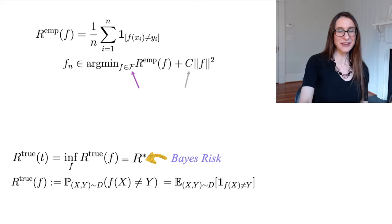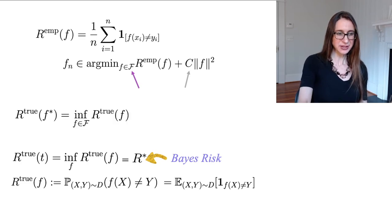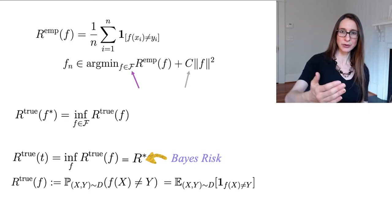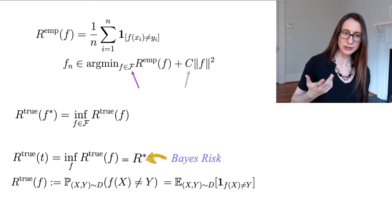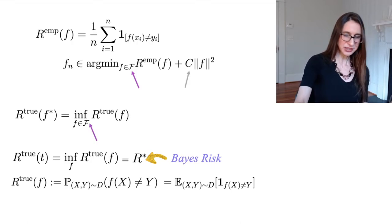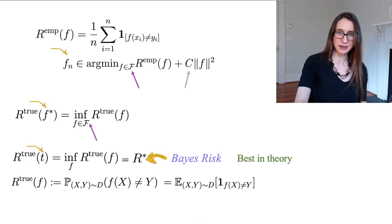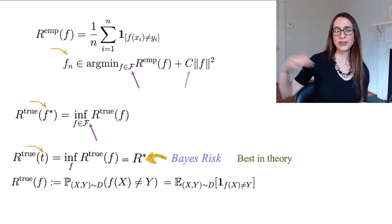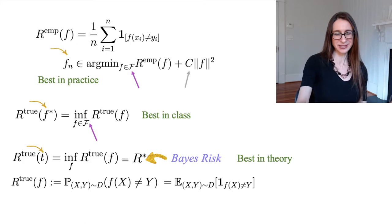You have FN — what you can produce — you have T — what you want — and something in between: F star, the minimizer of the true risk within the class big F. Think of T as the best in theory, with an infinite capacity function class and the whole distribution; FN as the best in practice; and F star as the best in class. F star knows the whole distribution of data, so there's no randomness in F star or T — the only randomness is in the construction of FN.